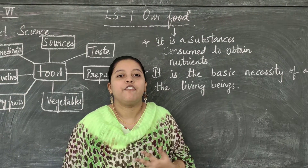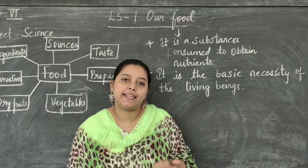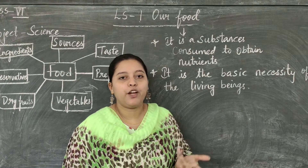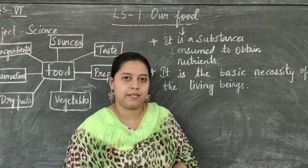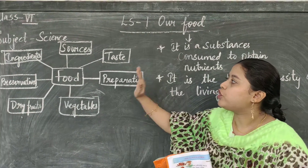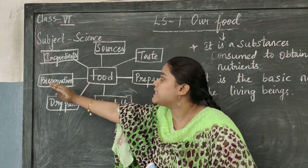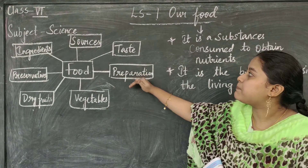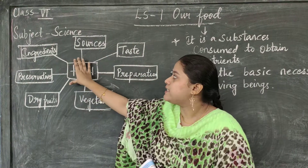Why do we eat food, children? We all eat food to get energy and to be healthy and strong. We get food from plants and animals. In this chapter you are going to read about food sources, ingredients, preservatives, diet, vegetables, preparation, and taste.